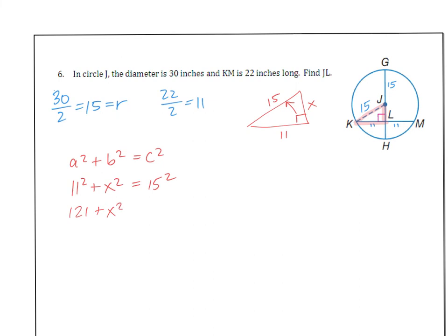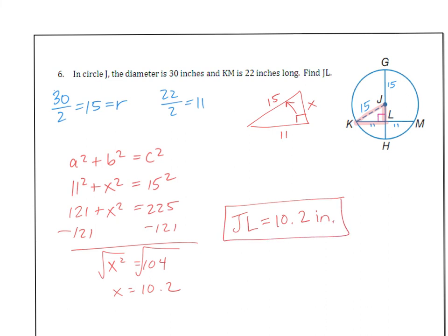121 plus X squared equals 225 minus your 121. You get X squared equals 104. And then you have to take the square root. So square root both sides. X turns out to be 10.2. And if you go back, that is JL. So I'm just going to rewrite this. JL is 10.2. And I think it's inches. Because up above, we do have a label.